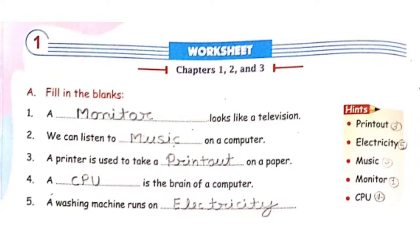And fourth question: A CPU is the brain of a computer. And question number 5: A washing machine runs on electricity.